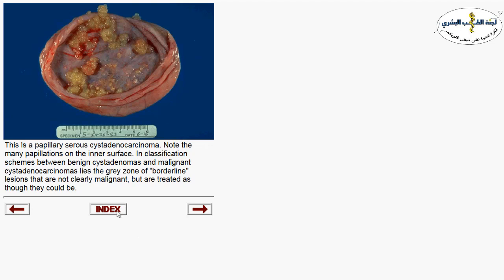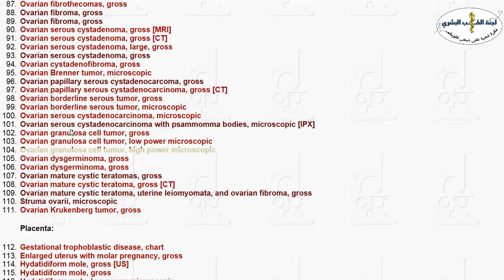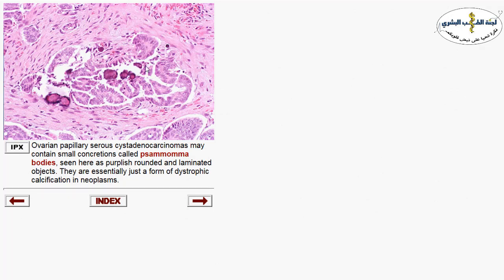Surface epithelial tumors are divided into benign, borderline, and malignant. Types include serous, mucinous, transitional, and endometrioid — all types of epithelial ovarian tumors. Under the microscope, serous cystadenocarcinoma may show psammoma bodies, which are a type of dystrophic calcification.